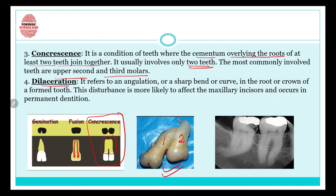Then comes dilaceration — it refers to an angulation or sharp bend or curve in the root or crown of a formed tooth. If you look at this tooth, you can see the root has bent and there is a curve. This disturbance is more likely to affect the maxillary incisors and occurs in the permanent dentition.